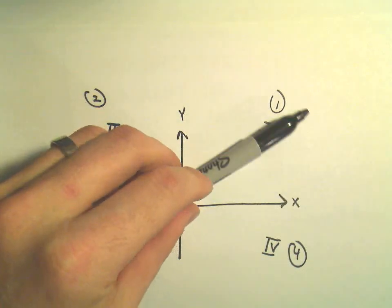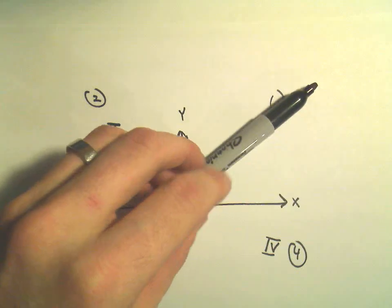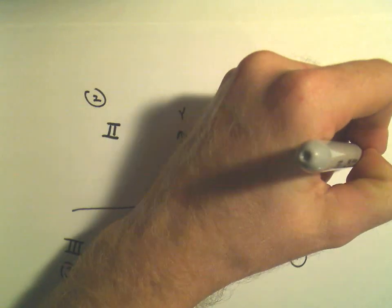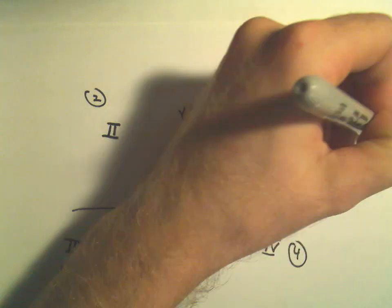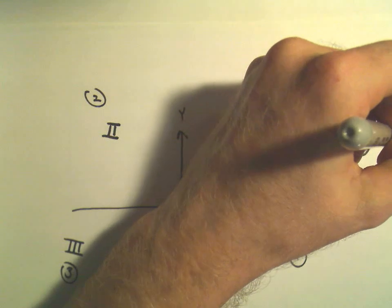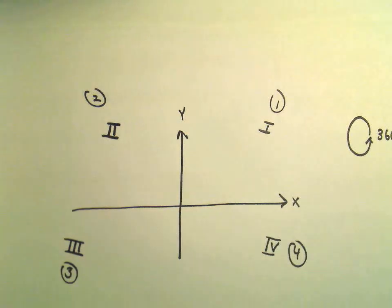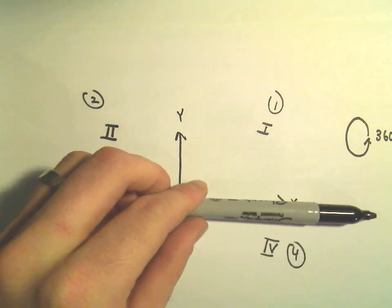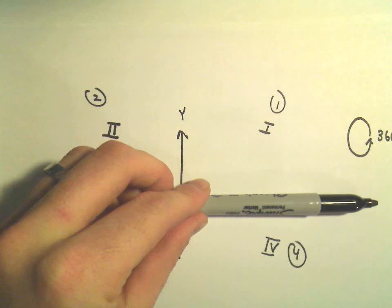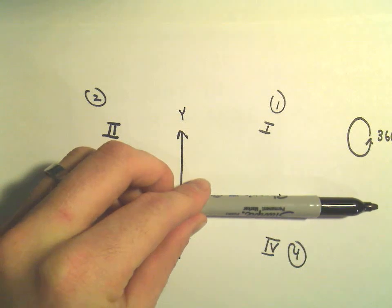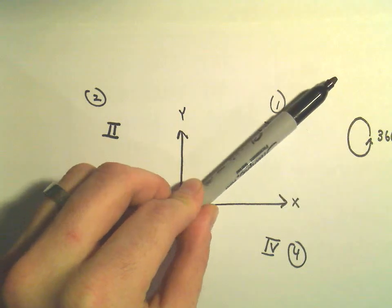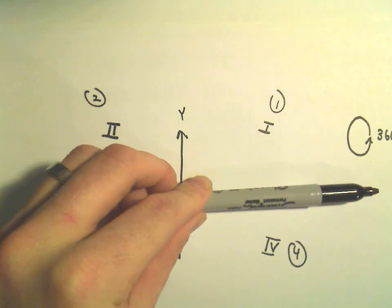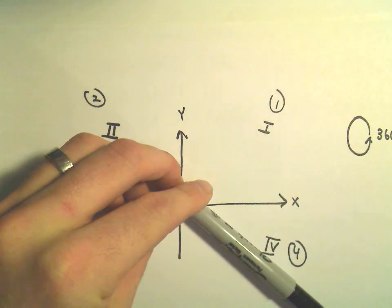If you go all the way around, you've rotated 360 degrees. The convention is we measure angles from the positive x-axis. If the angle is positive, we go counter-clockwise. If the angle is negative, we go clockwise.